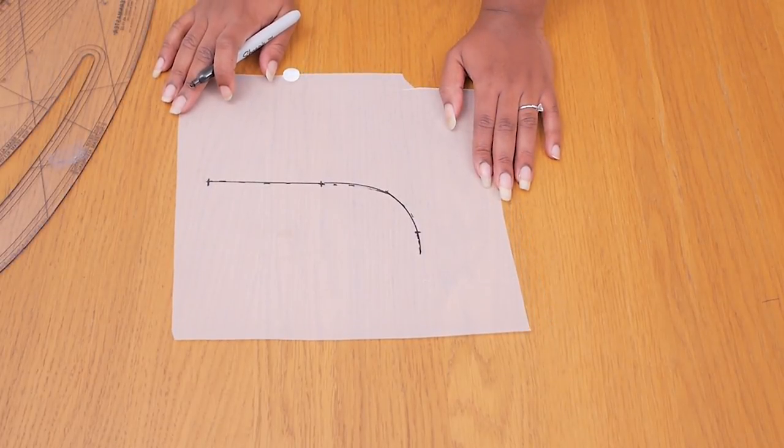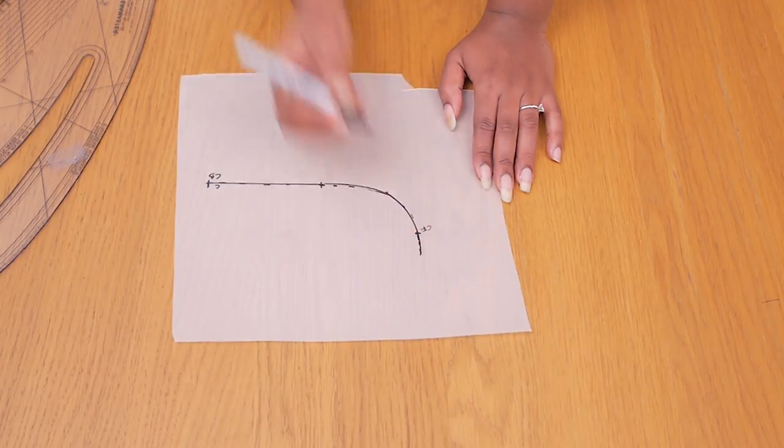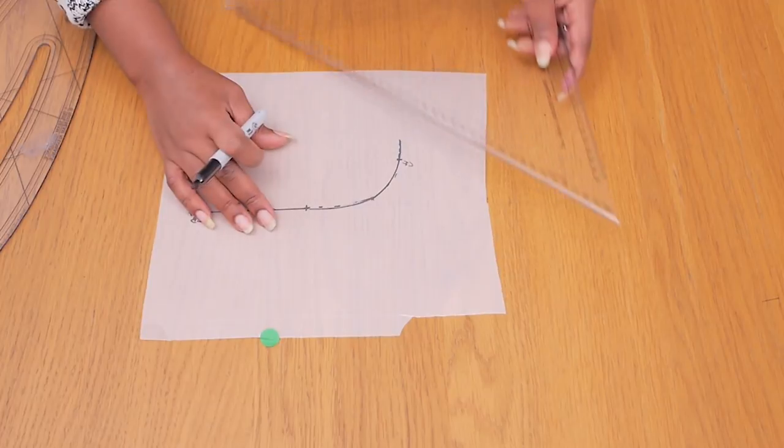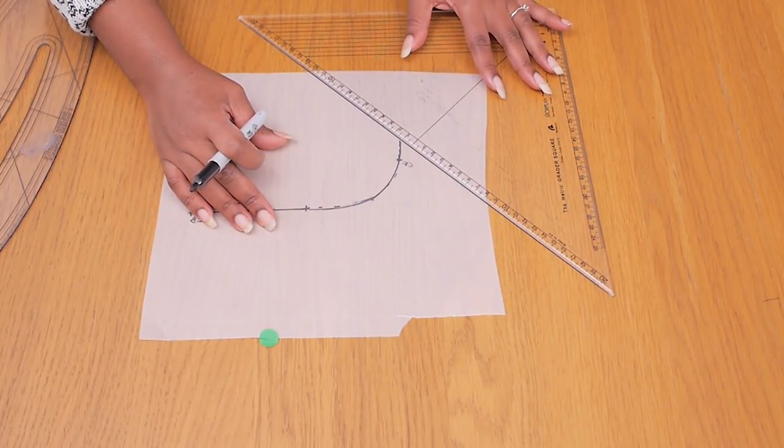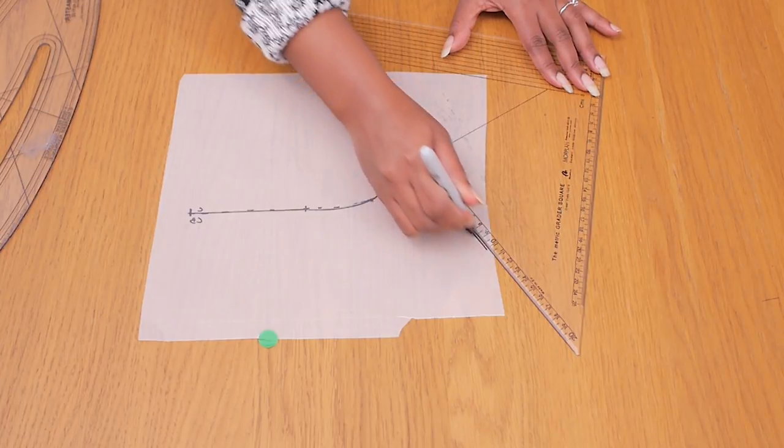So I want a quite big and bold and pointy collar. You can decide on whichever shape you like. You can decide to go for a more rounded collar, something thinner but I knew from the start that I wanted the collar that was on the bigger side. So I'm just grabbing my set square and I'm going to be drawing a line that is diagonal from that center front point.